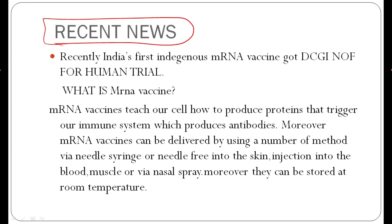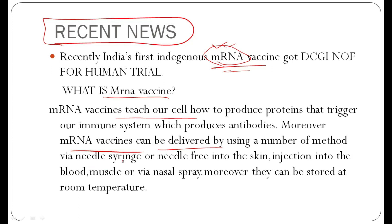Recently, India's first indigenous RNA vaccine was developed. An RNA vaccine teaches our cells how to produce an immune response — that means our immune system creates antibodies against the virus. RNA vaccines can be delivered by a number of methods: traditional injection with needle and syringe, needle-free delivery into the skin, injection into the blood, or direct injection.